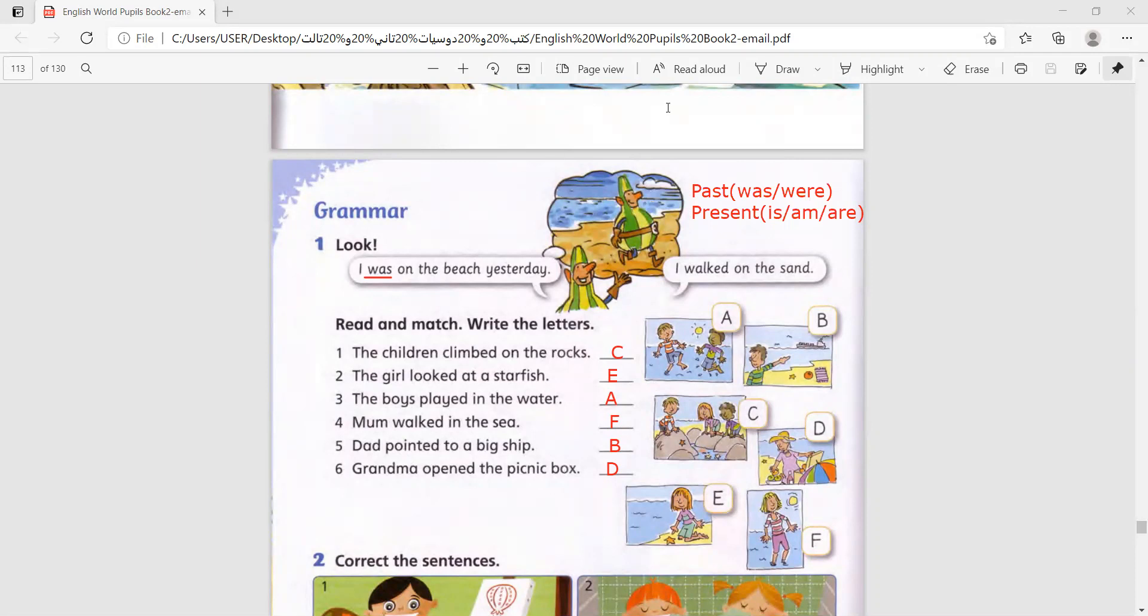Let's take a look at these sentences and look at the verbs. Climbed, looked, played, walked, pointed, and opened. Those are all verbs. This is a verb. They're all verbs, afa'al.